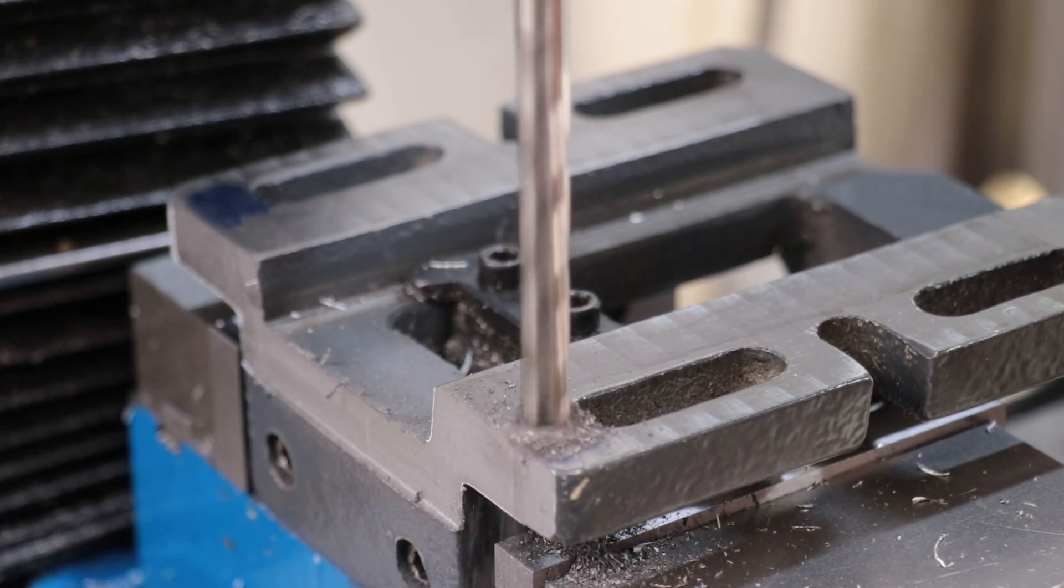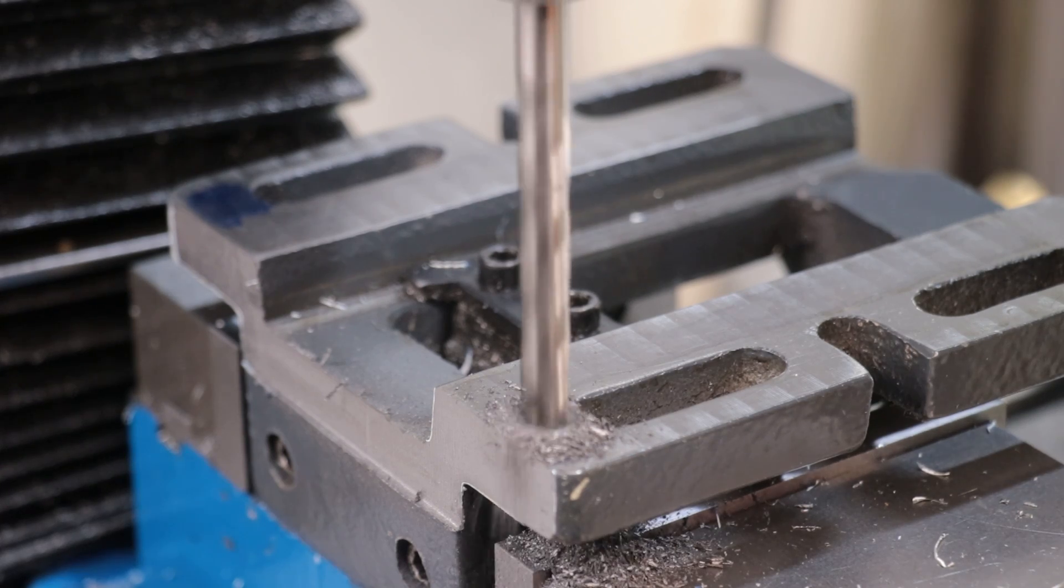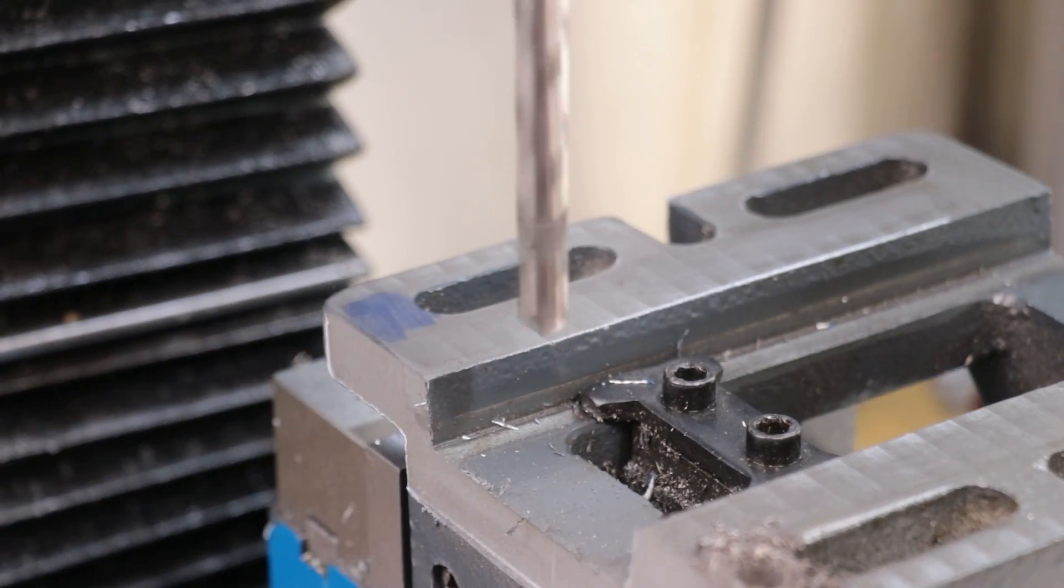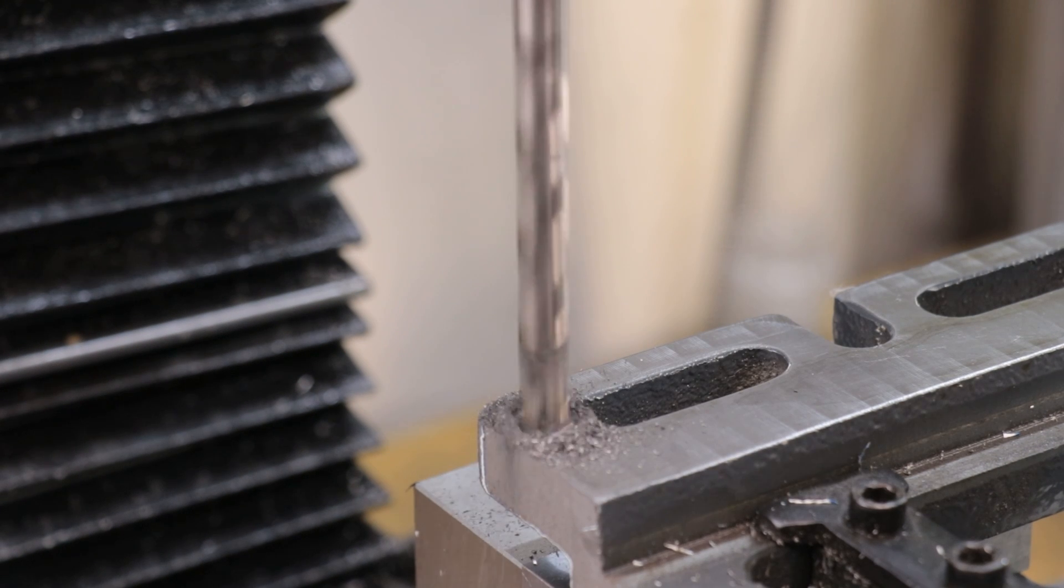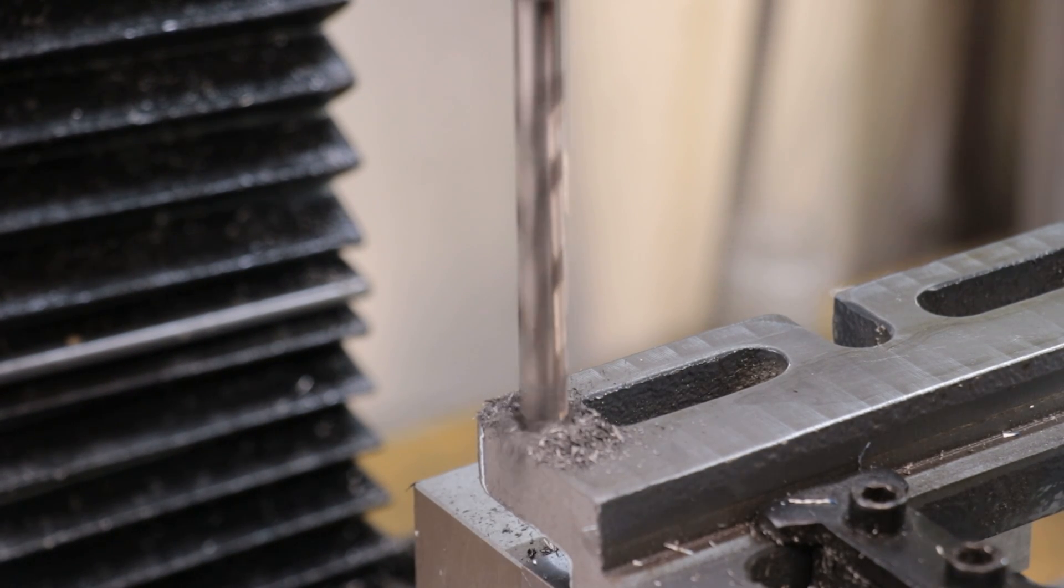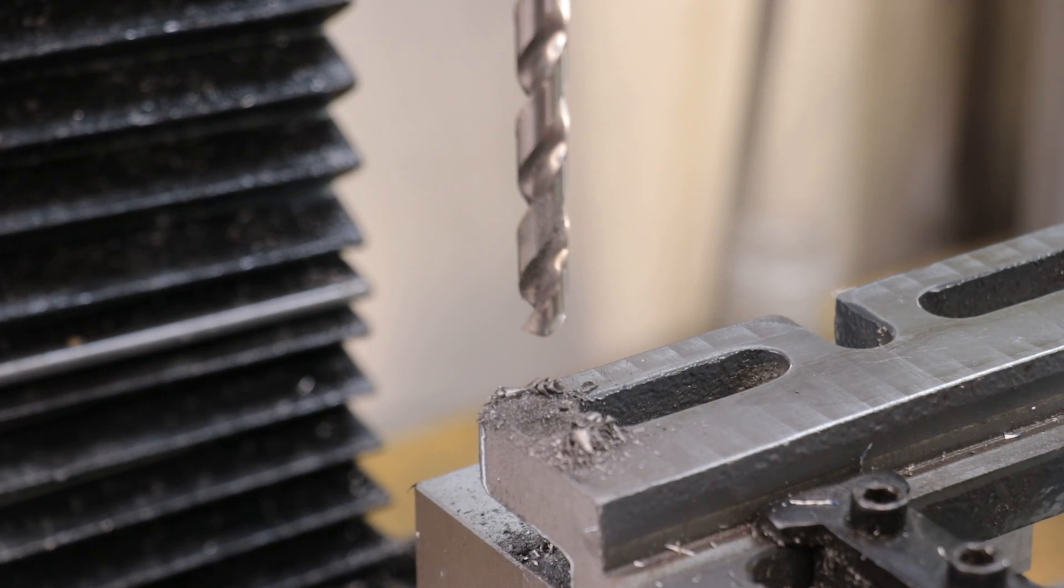And the final thing left to do is drill 2 holes for the mounting screws. Unfortunately, there won't be a huge amount of material surrounding the holes, but it should be enough, at least for light milling and drilling. I could have probably moved the holes a bit inwards. There's a bit more material on either side, but it's always easy to say that, once you've already drilled the holes.